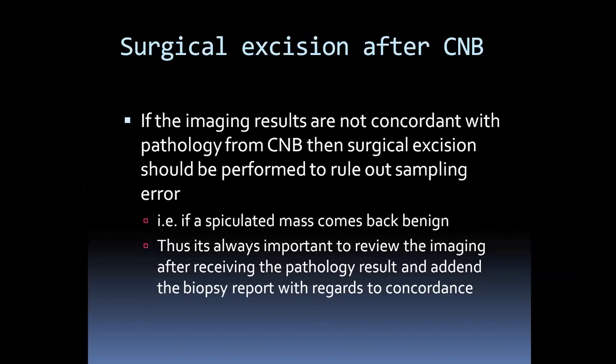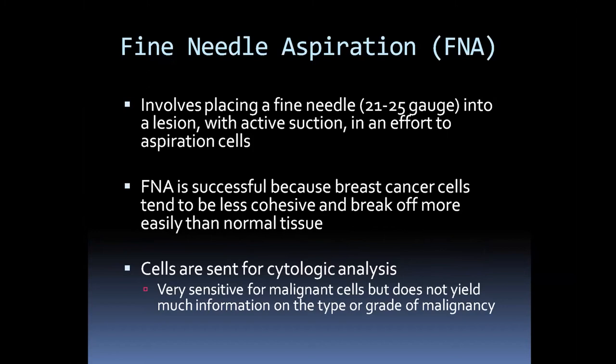Sometimes surgical excision is still needed after core biopsy. One reason is a high-risk lesion result. Another is when pathology is discordant with imaging — for example, if we see a spiculated mass on imaging but pathology returns fibrocystic tissue, we recommend surgical excision to rule out sampling error. It's always important to review imaging in light of pathology and to assess concordance. Anytime there's a question of concordance, defer to surgical excision, which is the gold standard.